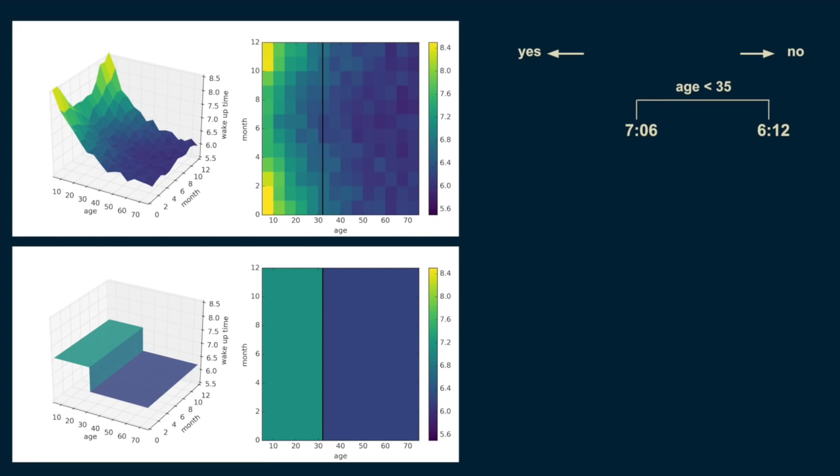We repeat the process, subdividing our younger population on whether it is before or after the middle of September, and whether it is before or after the middle of March. This isolates the winter months from the summer months. Winter months have a wake-up time of 7:30 for those under 35, and in the summer months it's 6:56. Then we can revisit our over 35 population and split them again on age 48 to get a more accurate representation.